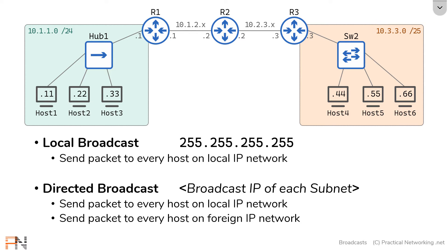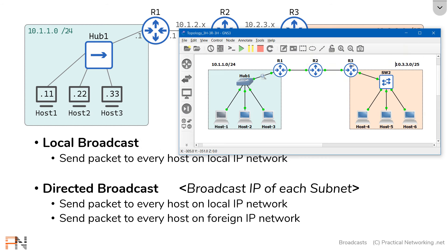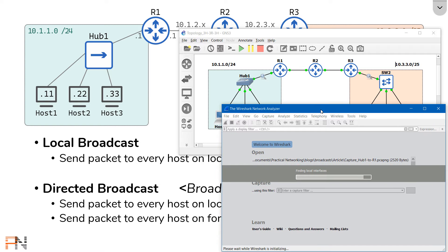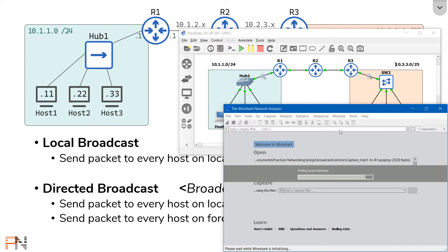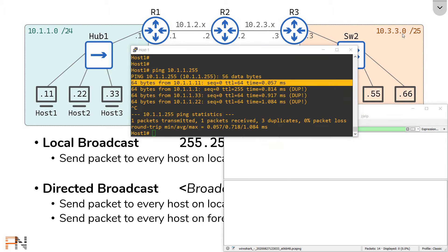We have the 10.3.3.0/25 network over here. If we do a little subnetting, we can determine that the broadcast IP address for that subnet is 10.3.3.127, and host 1 can use that IP address to send a packet to everybody in that network. We already have a packet capture running on that interface. Before proving the directed broadcast to a foreign network, I want to show what the directed broadcast packet looks like as host 1 sent it versus as it was delivered by router 3. Let's pull up our GNS3 window and start another packet capture, filtering to only show ICMP packets.